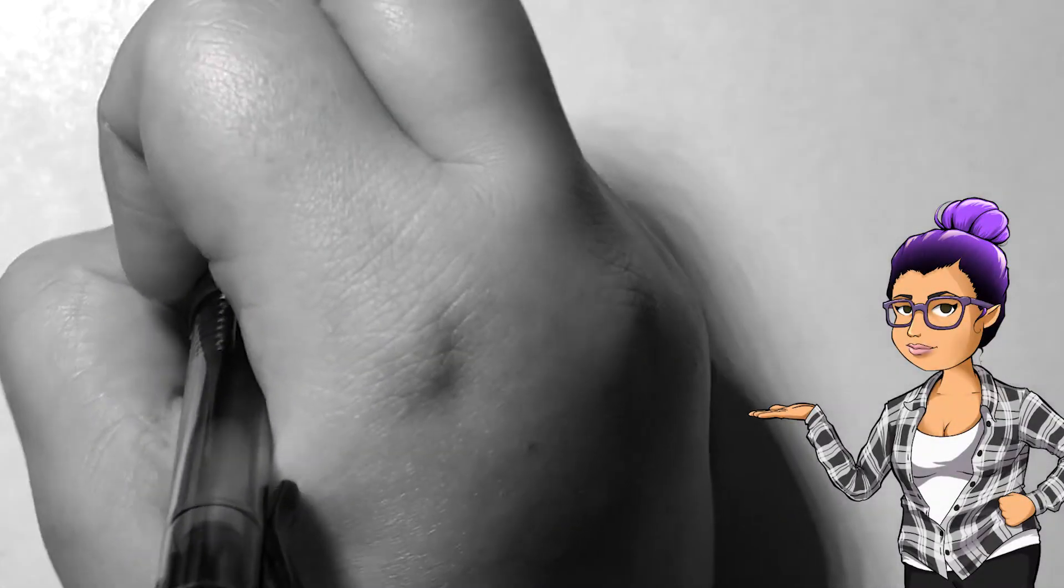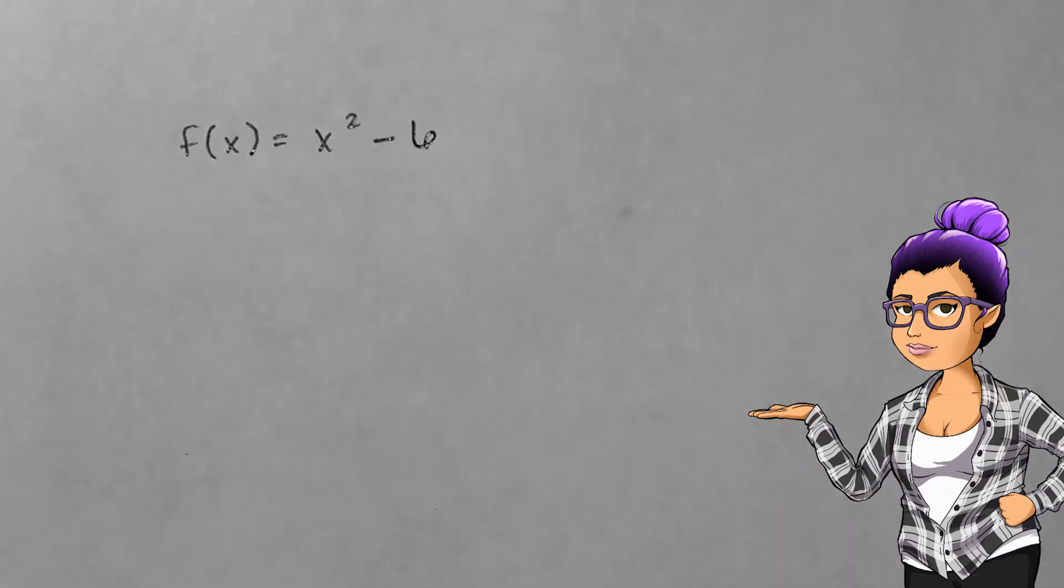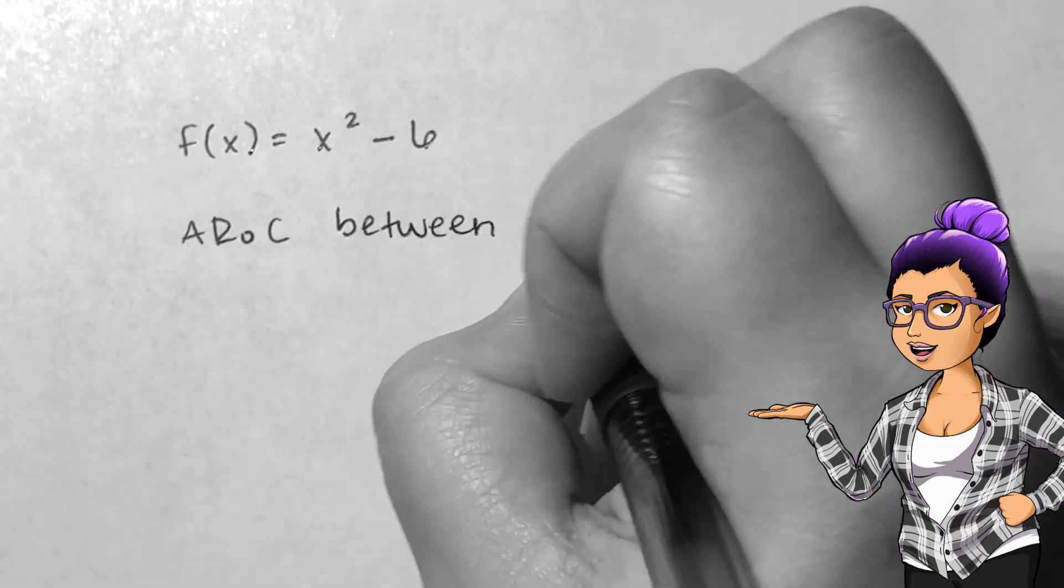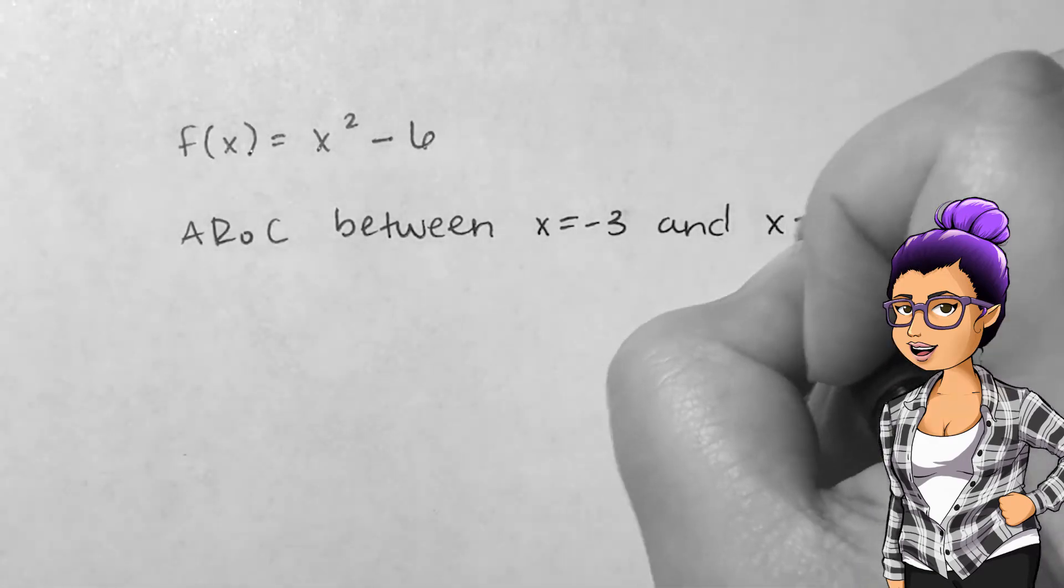If f(x) equals x squared minus 6, then I can find the average rate of change between x equals negative 3 and x equals 1 using the average rate of change formula.